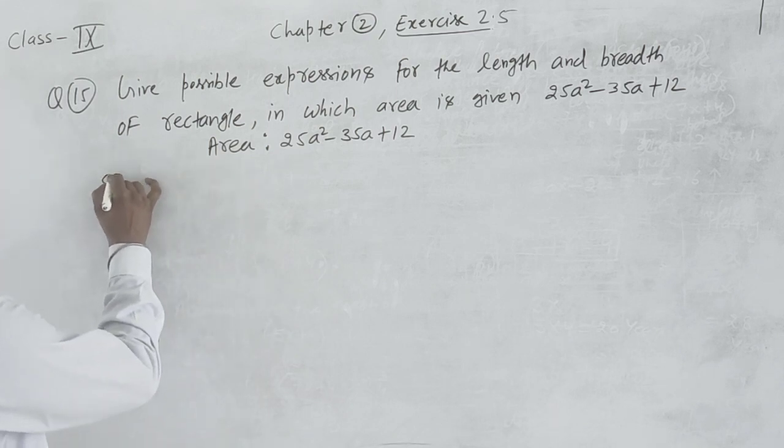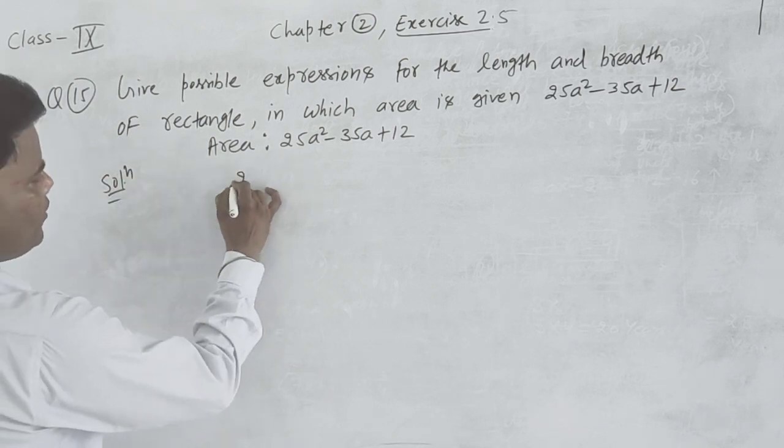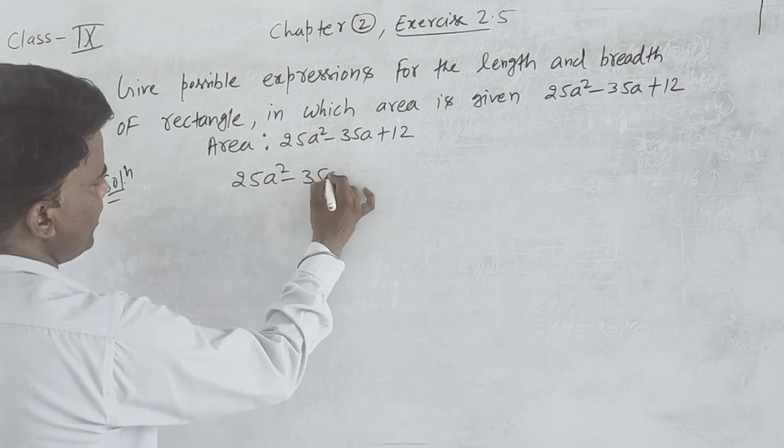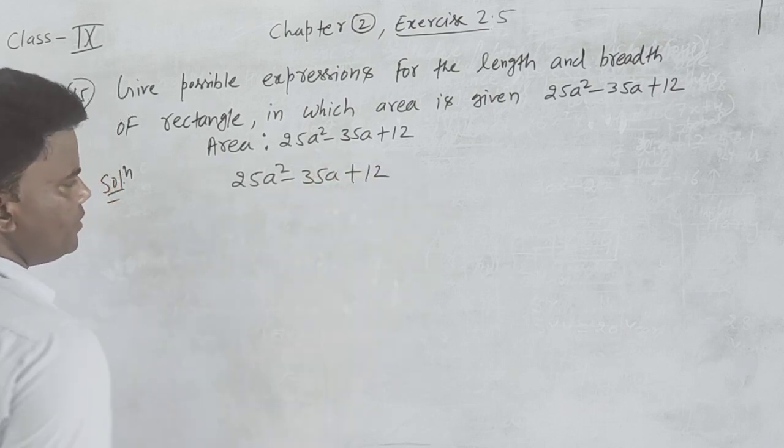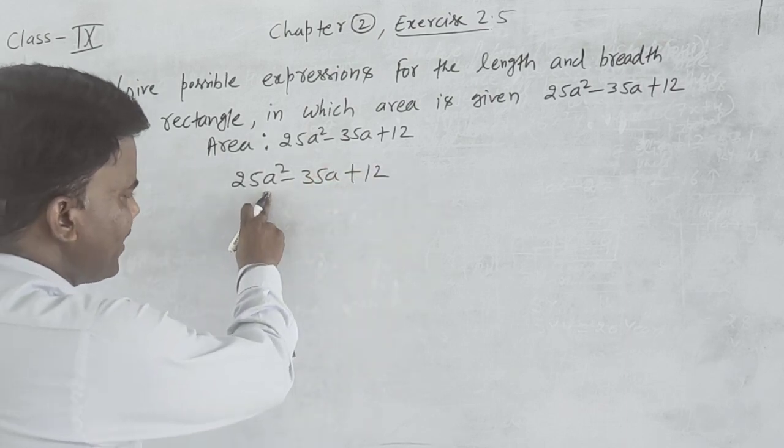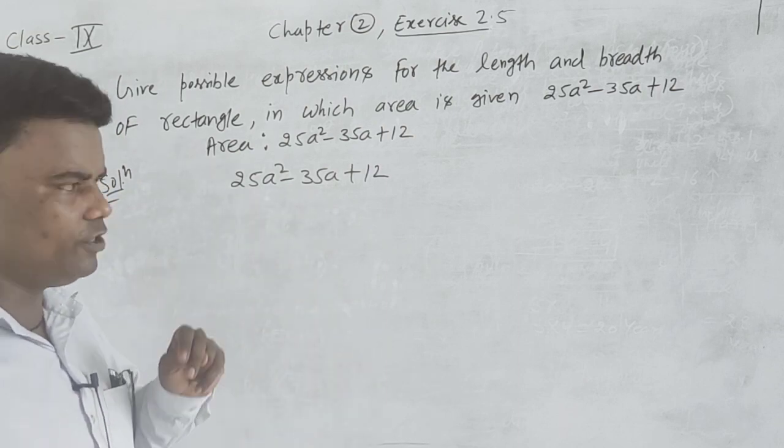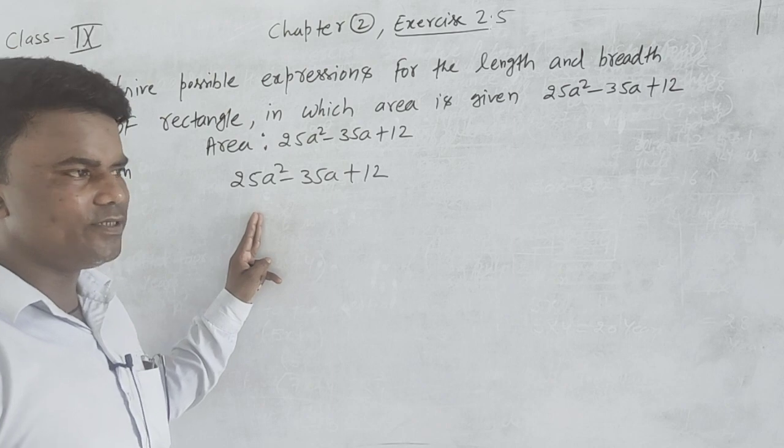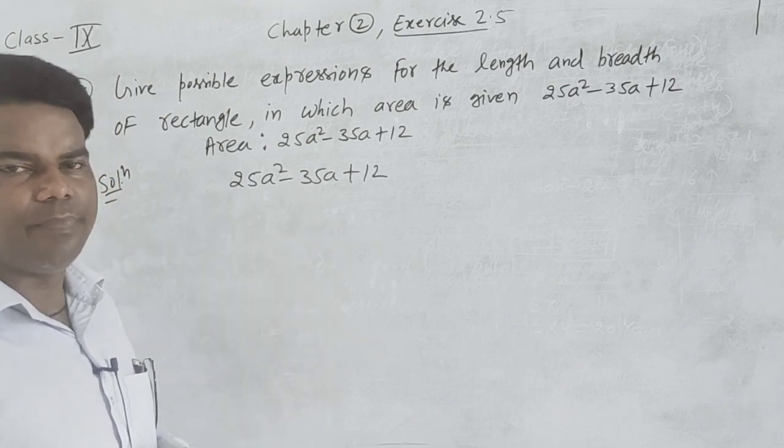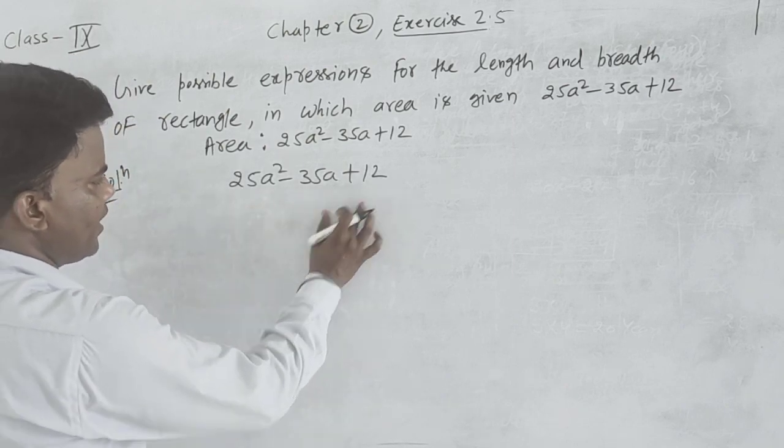Here 25a square minus 35a plus 12 is given. The maximum degree is 2, so we will find two zeros - one zero is length and other zero is breadth. We will find the factors.